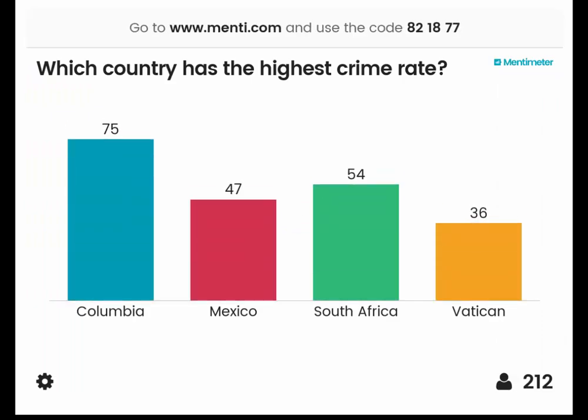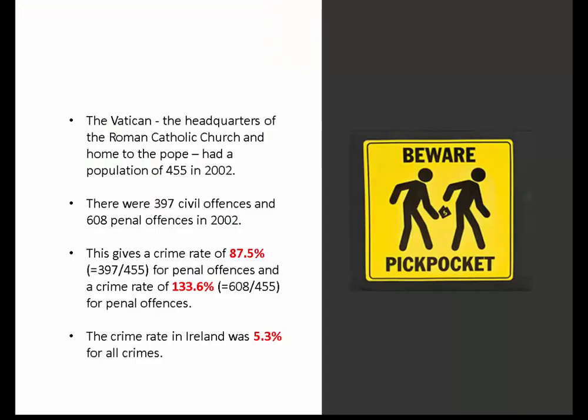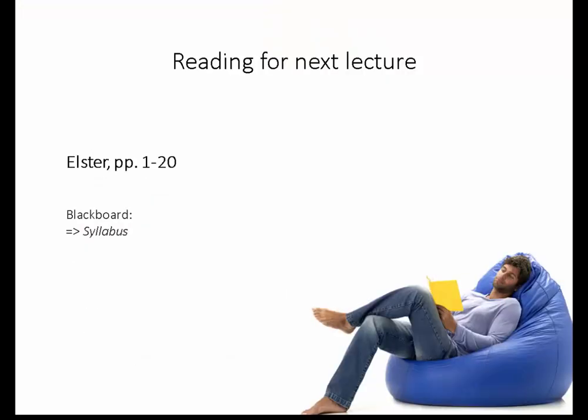So to resolve what we had — is it really a puzzle? The answer is: the country with the highest crime rate is the Vatican. This is the puzzle. But I'll talk more about it next time — it's about how we calculate crime rate. It's the number of crimes divided by the number of people that live there, and there are not an awful lot of people living in the Vatican. The reading for Wednesday is the first 20 pages by Elster.